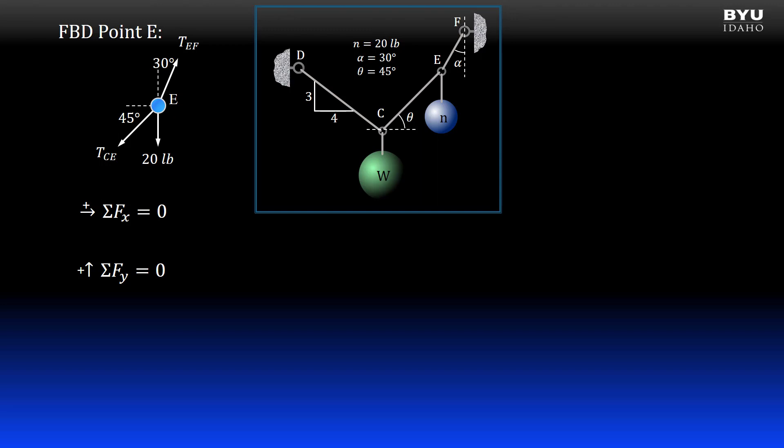We will have two unknowns in both equations. In the x direction, we'll have TEF times the sine of 30 minus TCE times the cosine of 45. In the y direction, we'll have TEF times the cosine of 30 minus TCE times the sine of 45 minus 20 equals zero.